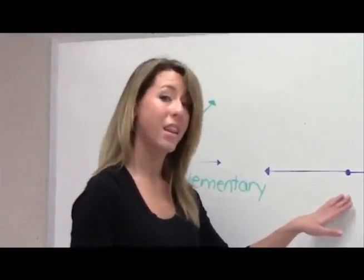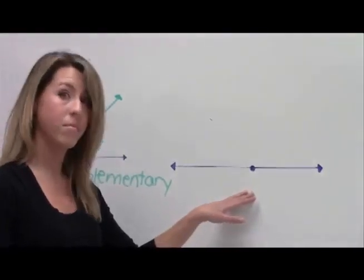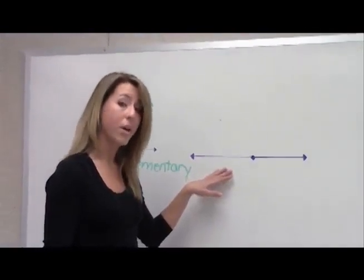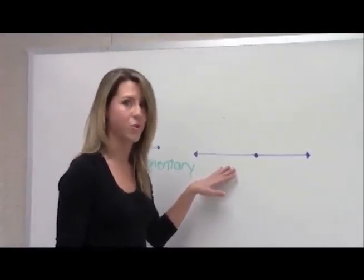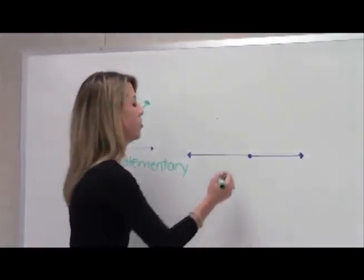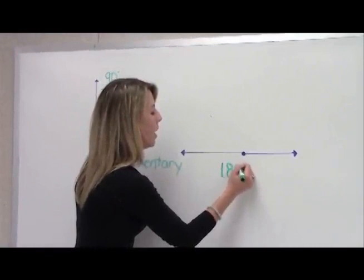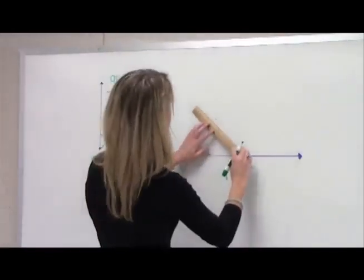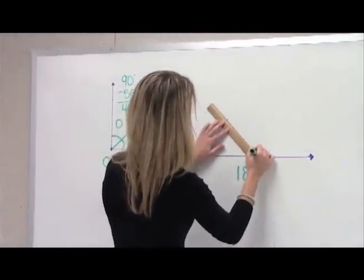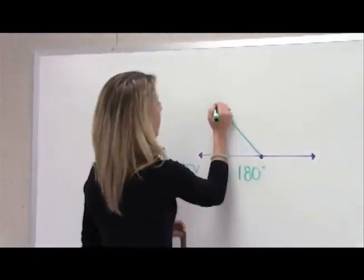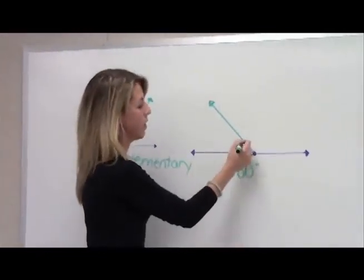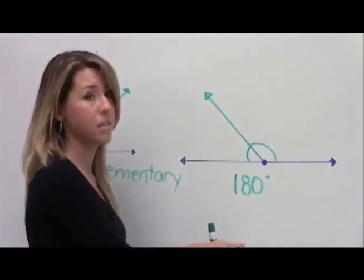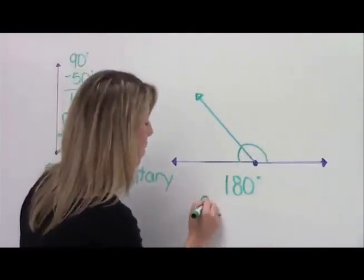If I take a look at this straight angle here, I can see that I have these two rays that are forming a straight line. We call this a straight angle because it looks just like a straight line. Straight angles always have a measure of 180 degrees. If I divide this straight angle with a ray, I can see that I have two angles here and here that both measure 180 degrees. These two angles are called supplementary angles.